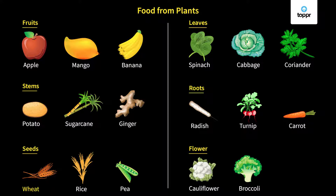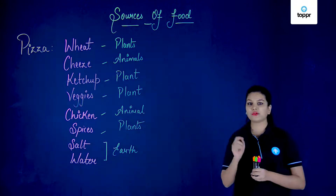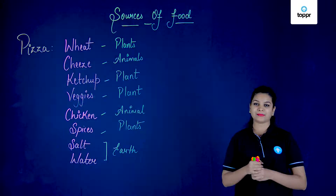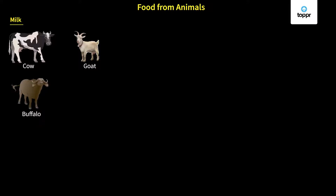So those are some of the plant parts that we eat in daily life. Similar to plants, animals can also give us a number of products. The most important food item we get from animals is milk, which can be obtained from cow, goat, buffalo, and camel. Milk is a very important food item and can be used to prepare curd, ice cream, ghee, butter, cheese, and many other products.